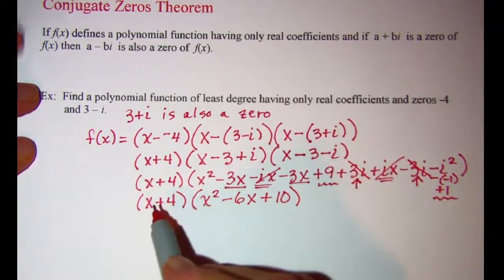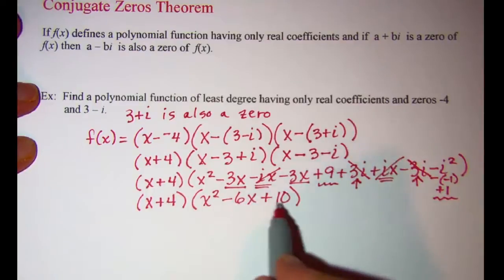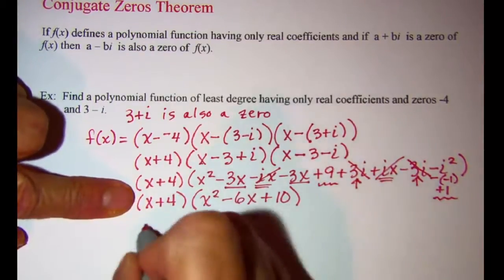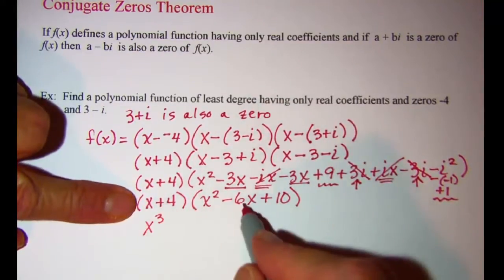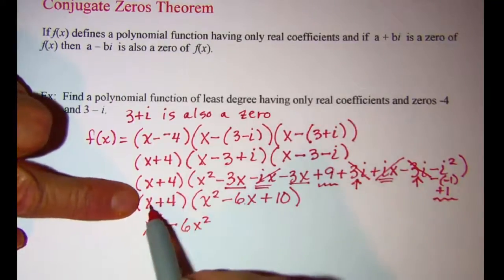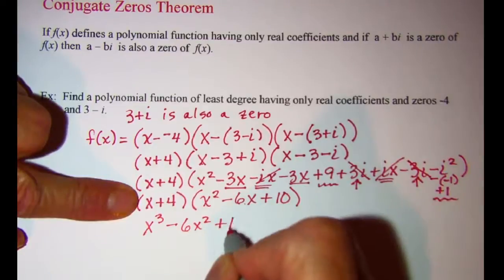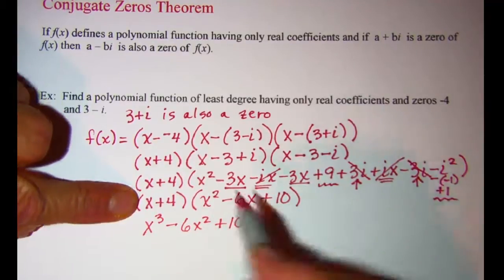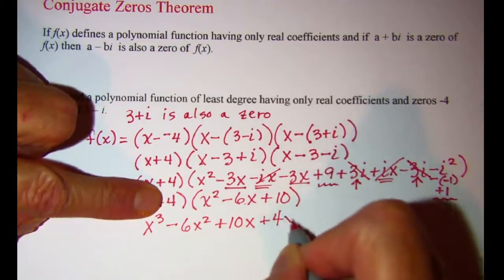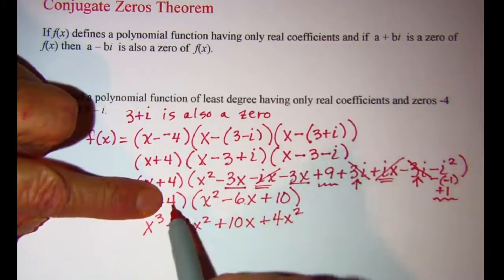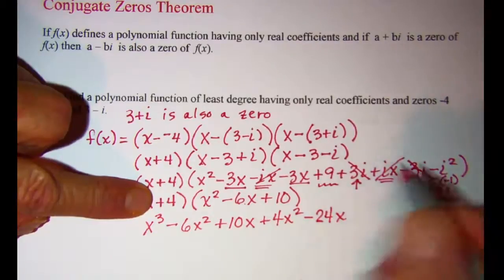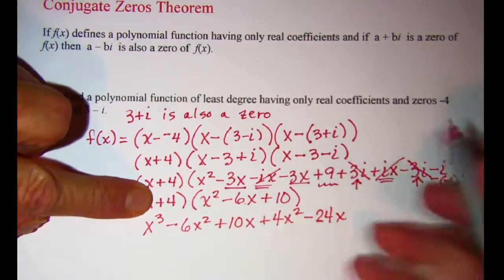Now let's multiply our x plus 4 through this trinomial. Taking x first: x times x squared is x cubed, x times negative 6x is negative 6x squared, x times 10 is positive 10x. Now taking the 4 through: 4 times x squared is 4x squared, 4 times negative 6x is negative 24x, and 4 times 10 is 40.